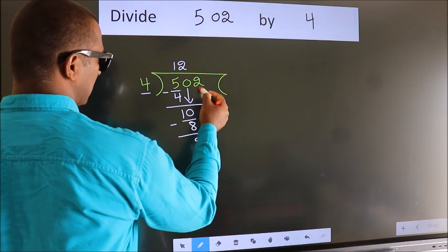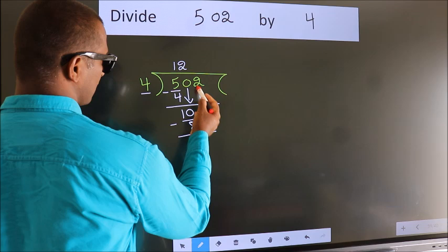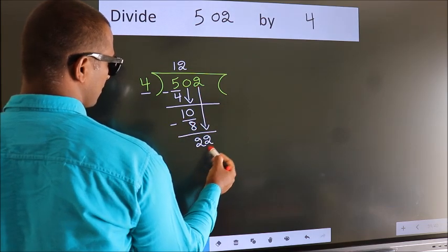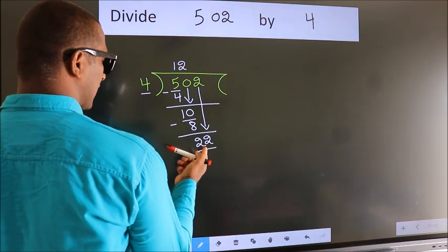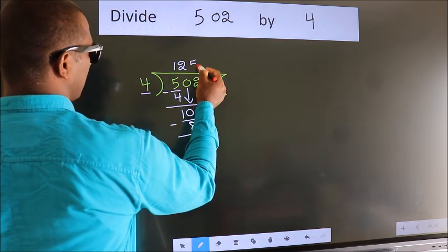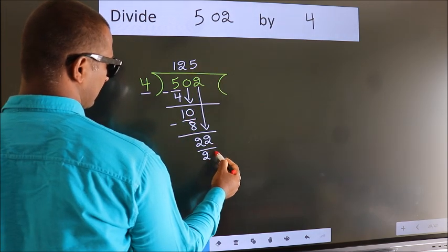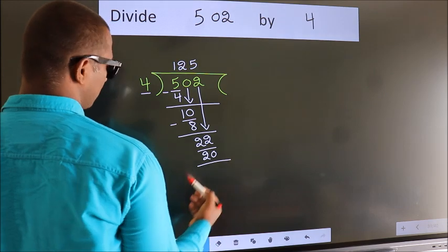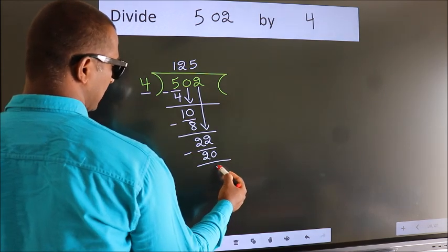After this, bring down the beside number, so 2 down. So 22. A number close to 22 in the 4 table is 4 fives, 20. Now we subtract. We get 2.